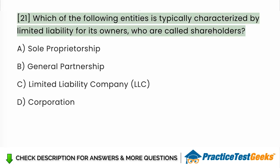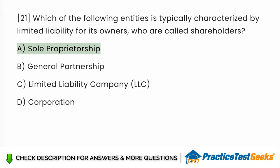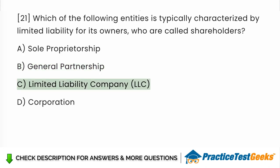Which of the following entities is typically characterized by limited liability for its owners, who are called shareholders? a. Sole proprietorship. b. General partnership. c. Limited liability company. d. Corporation. Answer: d. Corporation.